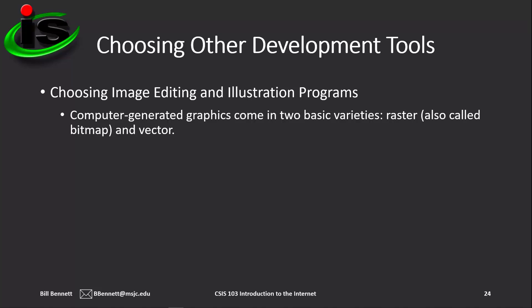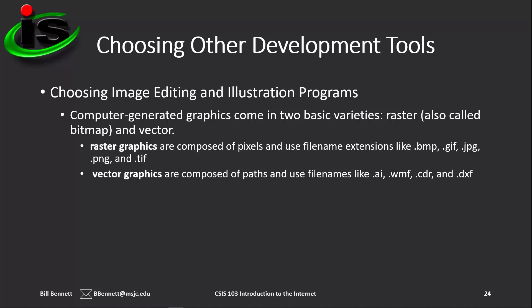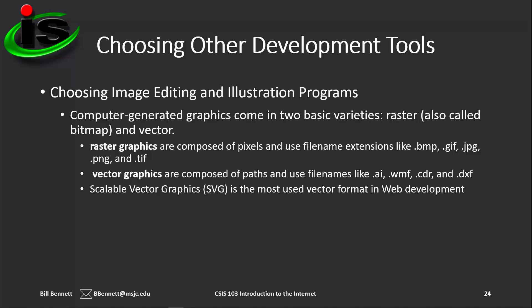Computer-generated graphics come in two basic formats: raster, also called bitmap, or vector. Raster graphics are composed of pixels and use file extensions like .bmp, .gif, .jpg, .png, and .tif. The .gif, .jpg, and .png are the three most commonly used formats in web development. Vector graphics are composed of paths and use file names like .ai for Adobe Illustrator, .wmf, .cdr for CorelDRAW, and .dxf. Scalable vector graphics, or SVG files, are the most used vector format in web development, and programs like Adobe Illustrator and CorelDRAW can export files to the SVG format.